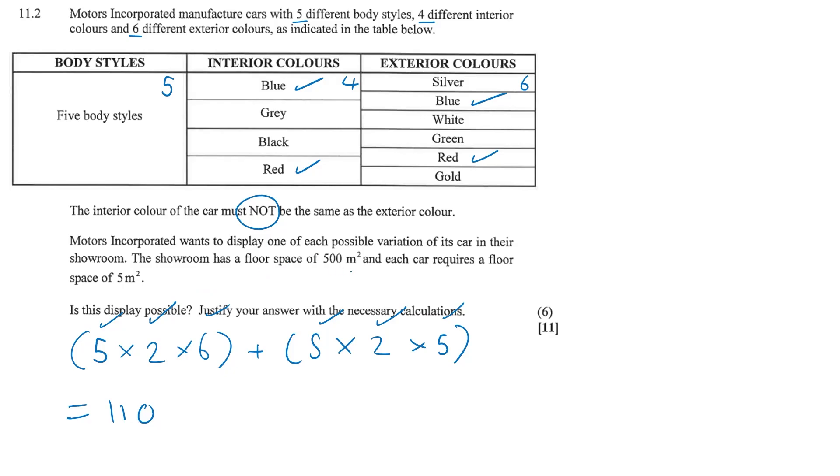The showroom only has a floor space of 500 meters squared, and each car requires a floor space of 5 meters squared. So 110 times 5 meters squared would be 550 meters squared. With all the car variations that we have, it gives us a total of 550. We don't have enough floor space to display one of each possible variation.